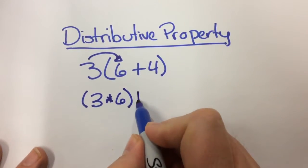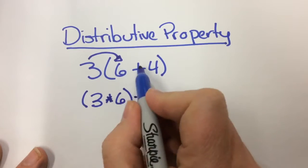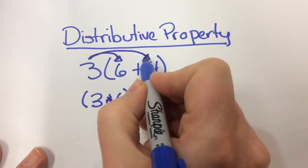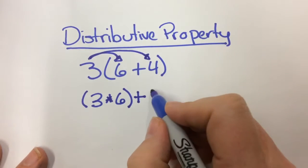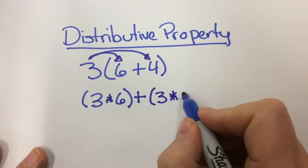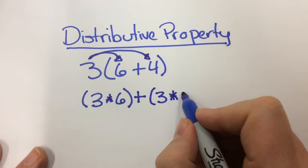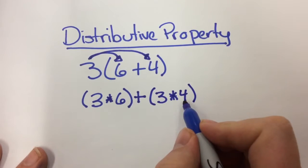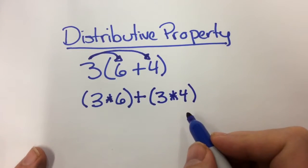Now the plus sign still has to stay here because I'm still adding. So I'm adding the quantity now of the second distribution, the second distributive property, which is 3 times 4. And I'm going to put that inside parentheses as well. Notice that I'm not using the x symbol for my multiplication. I'm using the star symbol. And again, that's what I want you to use when you're doing your assignment.